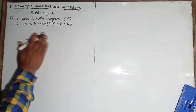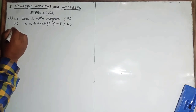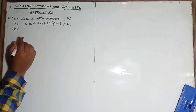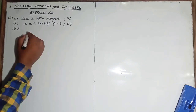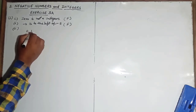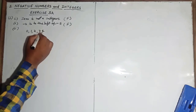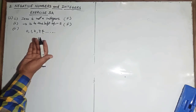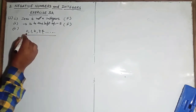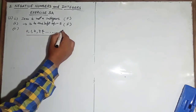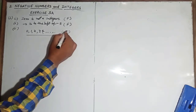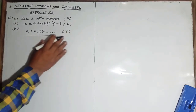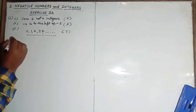Now come to the third part: 'All whole numbers are integers.' Whole numbers are zero, one, two, three, four, and so on. We know that all positive numbers including zero are integers, so it is a true statement that all whole numbers are integers.